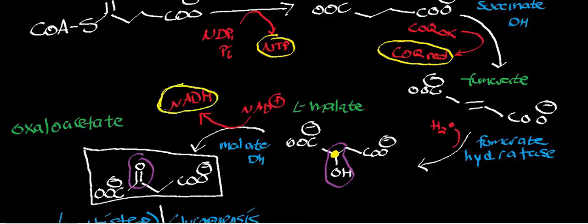Reduced coenzyme Q, or ubiquinol, fuels complex III of the mitochondrial respiratory chain — cytochrome c ubiquinol oxidoreductase. NADH feeds into NADH ubiquinone oxidoreductase, or complex I.